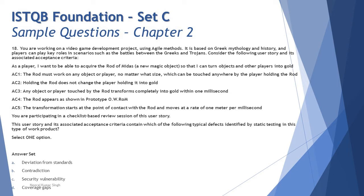Let's look at question number 18, which is again a typical agile scenario and is strongly not suggested for the foundation level examination. You are working on a video game development project using agile methods. It is based on Greek mythology and history, and players can play key roles in scenarios such as battles between the Greeks and the Trojans. The user story is written in a typical format: as a player, I want to be able to acquire the Rod of Midas, a new magic object, so that I can turn objects and other players into gold.